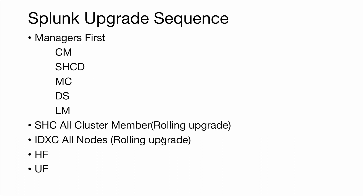The upgrade sequence starts with managers first. There are five managers, and I prefer to do: Cluster Master first, then Search Head Cluster, then Cluster Deployer, then Monitoring Console, Deployment Server, and License Master. The sequence can vary, but prefer to do the Cluster Master and Search Head Cluster Deployer first. There is a compatibility matrix — managers should always have a higher version than the other components.